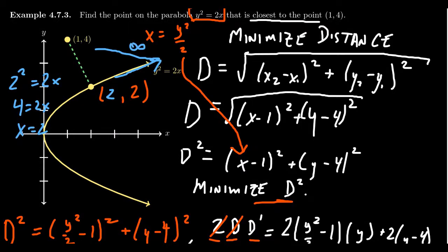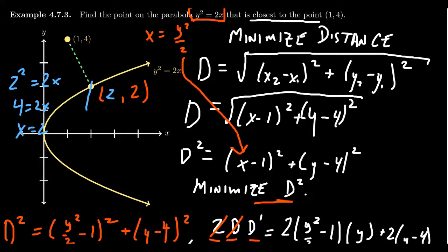That's not the minimum distance. But if we go down the other trajectory, go farther and farther away, same issue. We're going to get farther and farther away from this point. And that can get arbitrarily large going to infinity as well. So it would appear that our single critical number actually gives us our closest point. 2 comma 2 is the closest point on the parabola to the point 1 comma 4.